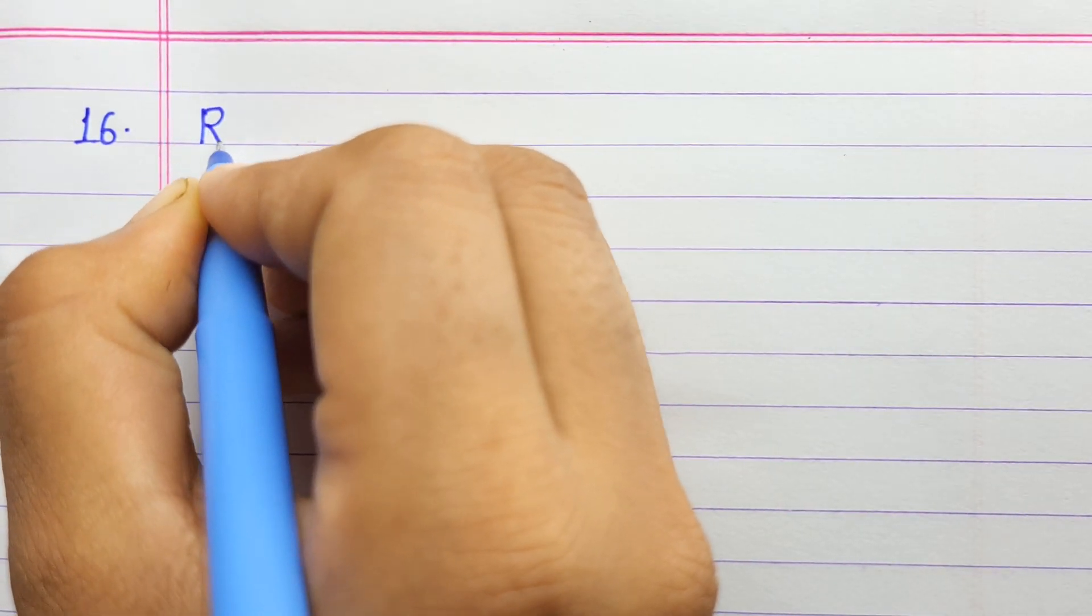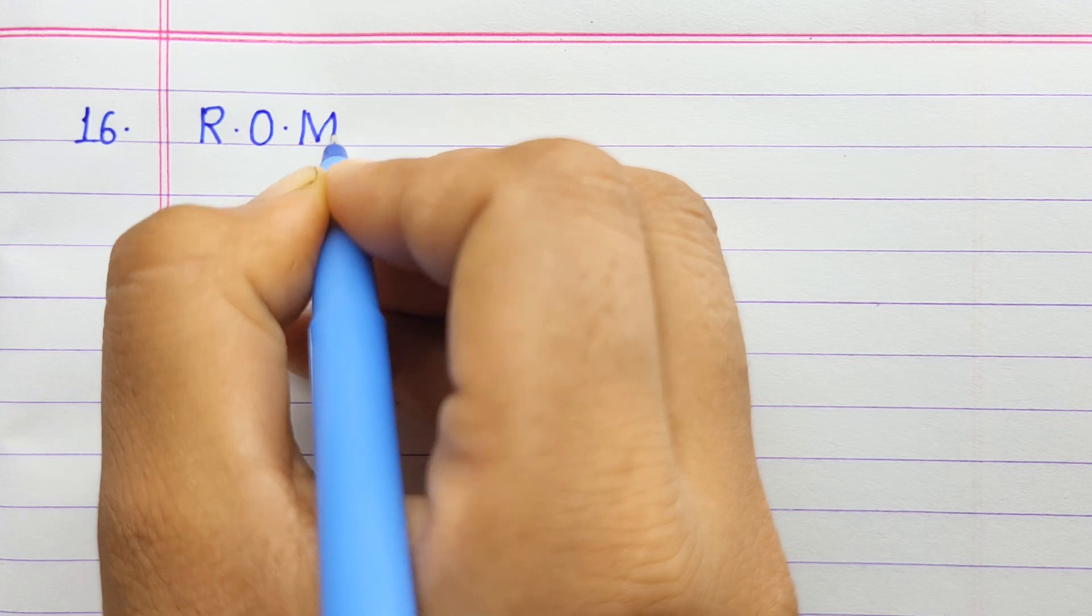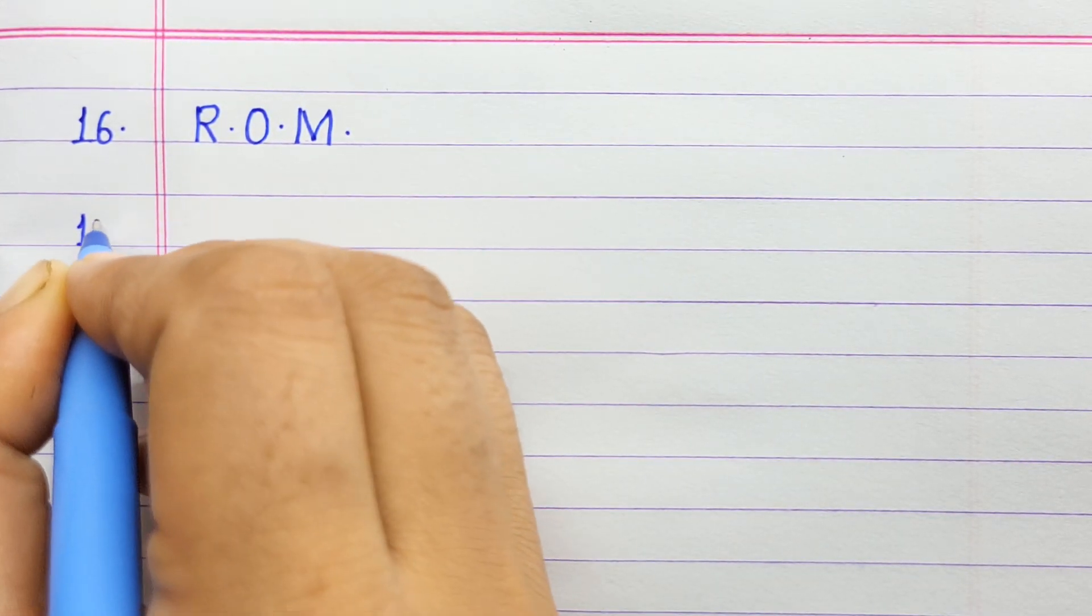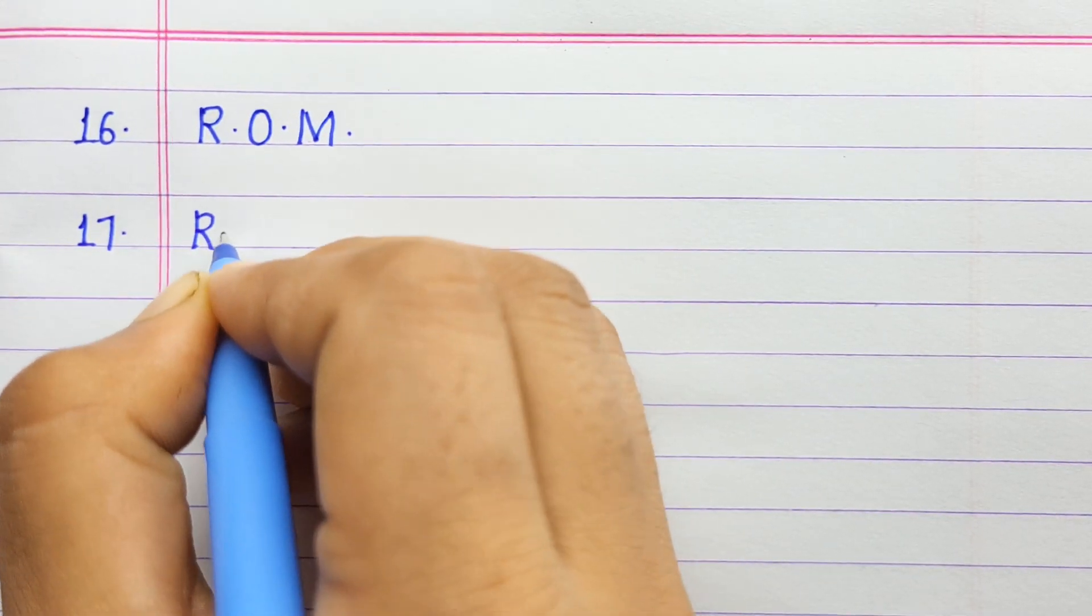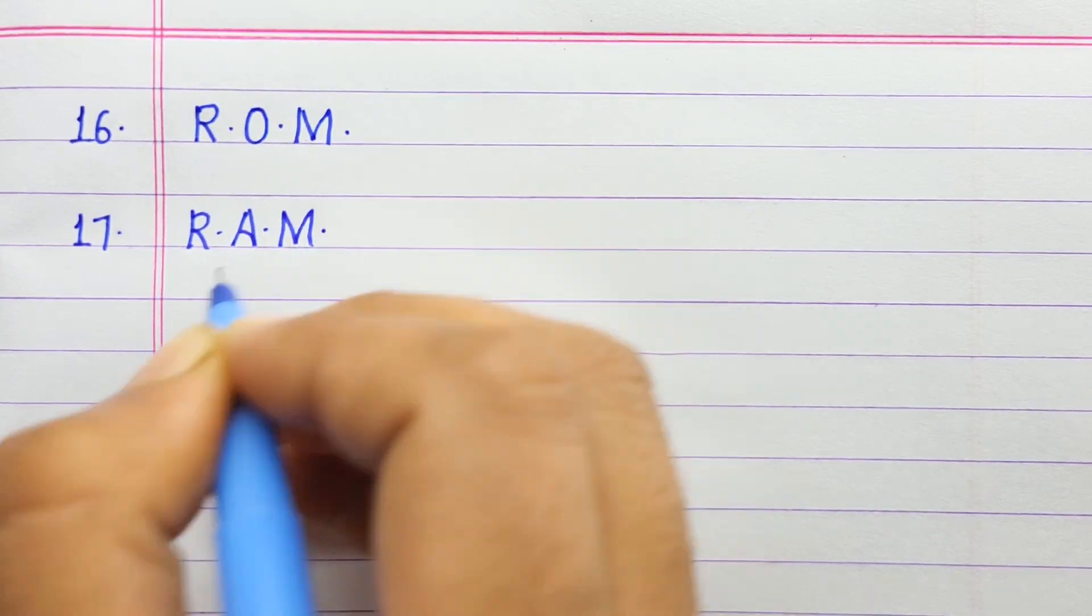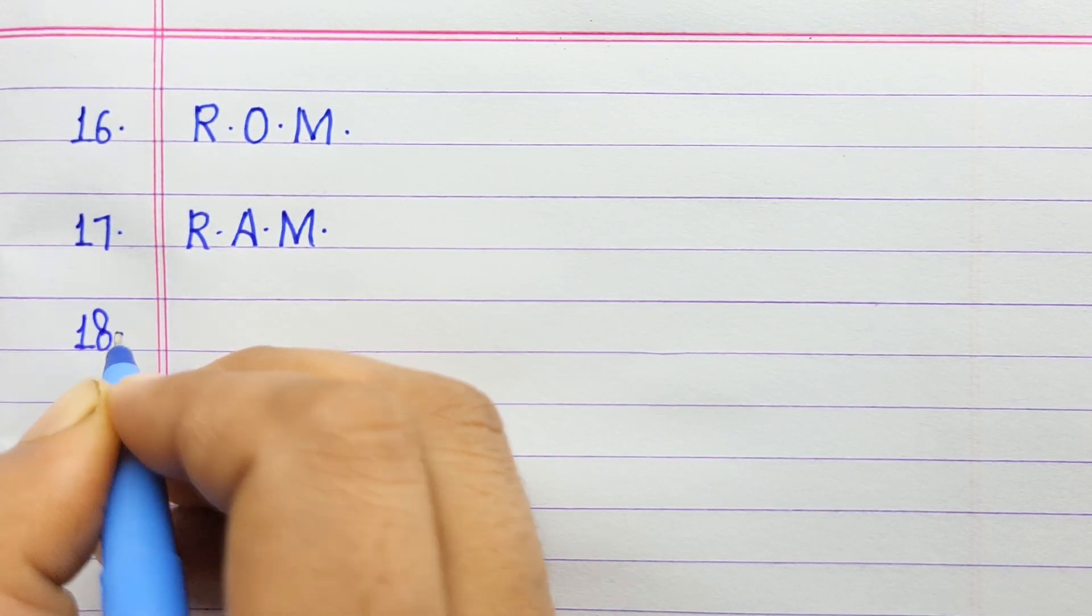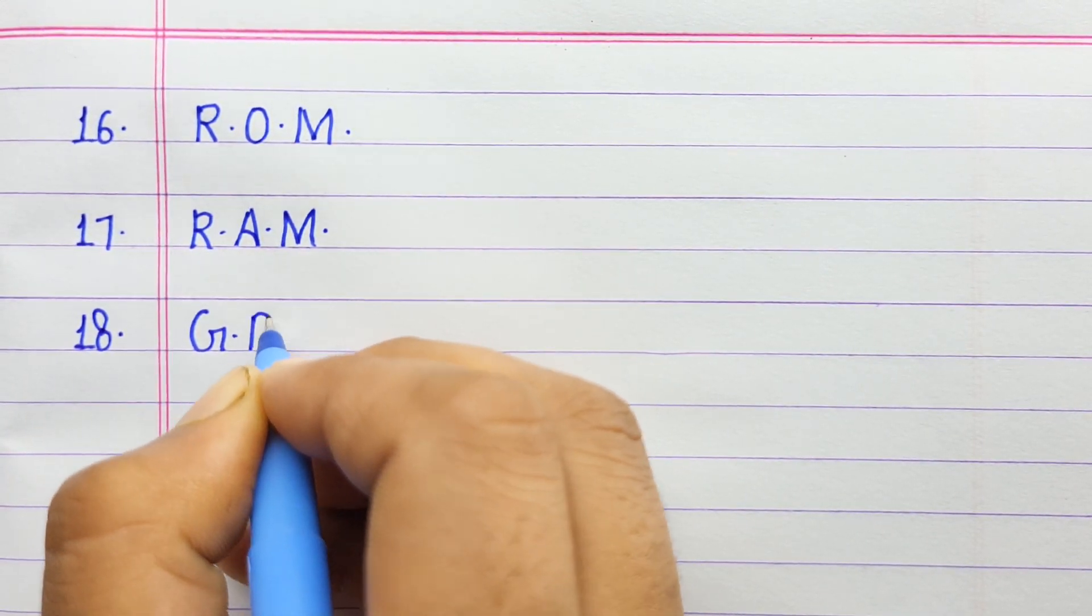Number sixteen: ROM. Number seventeen: RAM. Number eighteen: GPU.